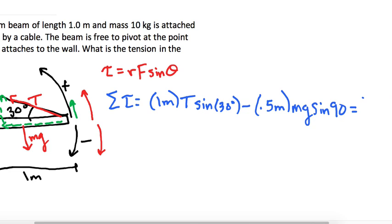So it's always equal to I times alpha. But in this case, since alpha is 0, I times alpha will also, that whole term will be 0. Because like we said, it's in static equilibrium.